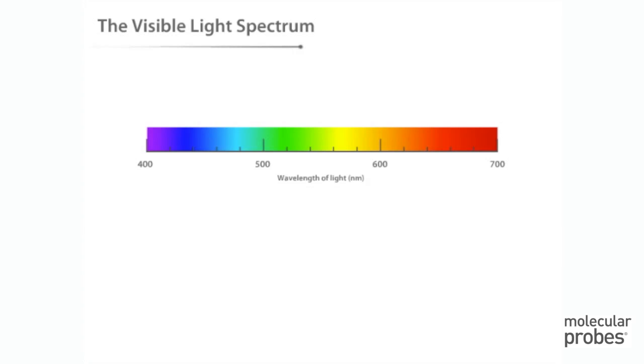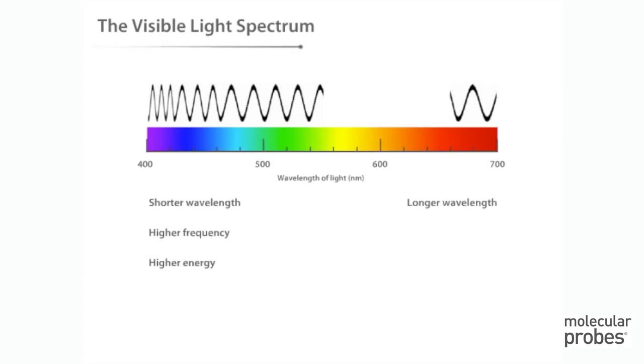Now that we've introduced the general process of fluorescence, let's take a look at the light spectrum and its importance in fluorescence. The visible spectrum is composed of light with wavelengths ranging from approximately 400 nanometers to 700 nanometers. Light waves with shorter wavelengths have higher frequency and higher energy. Light waves with longer wavelengths have lower frequency and lower energy.